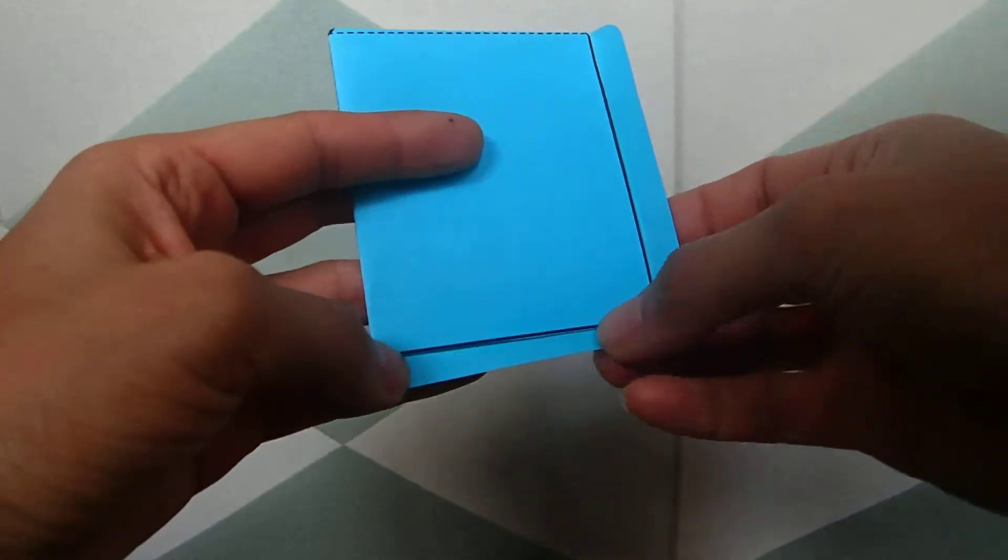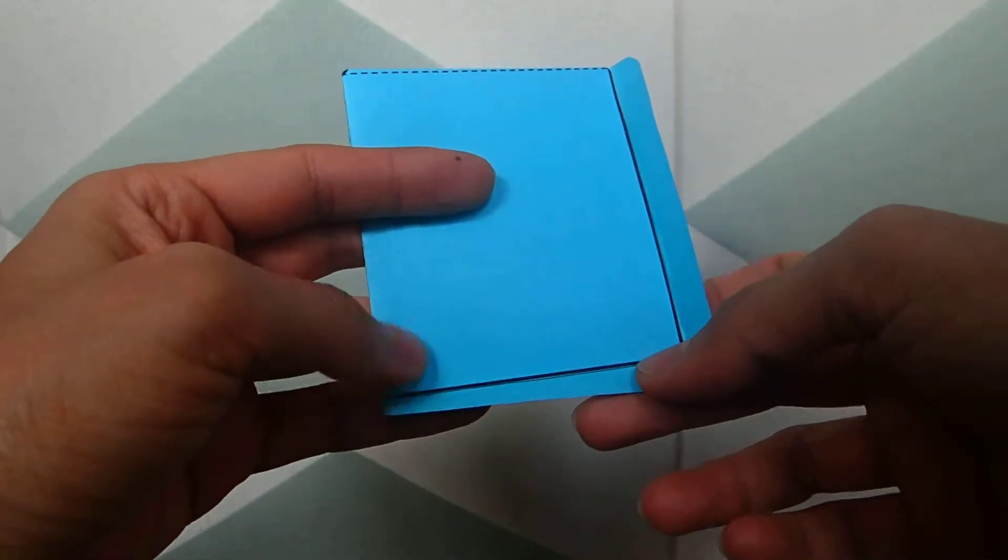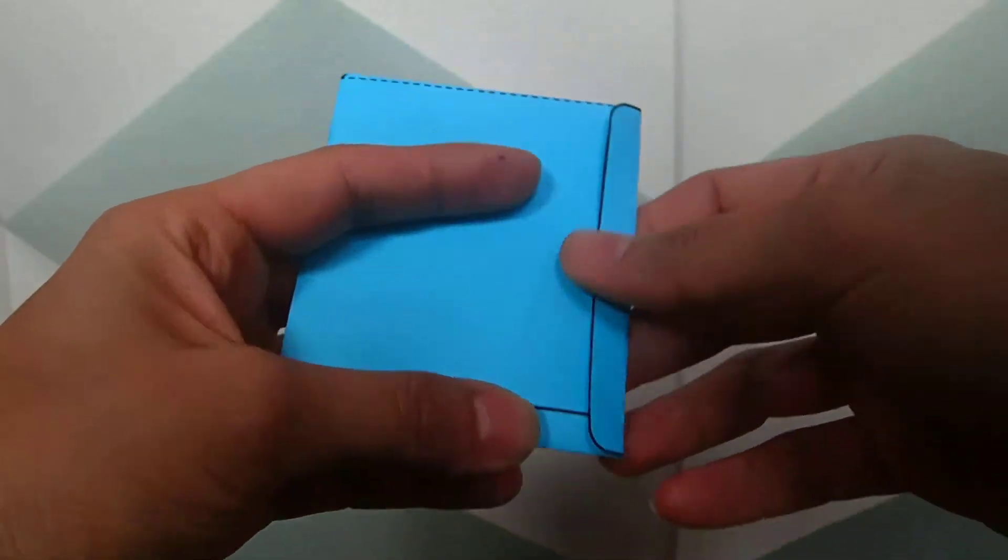Put glue along the inside seam of this tab, as well as on the inside seam of this tab, and then press down and secure.